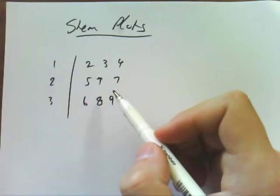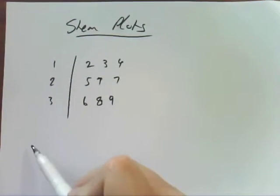So this is an ordered stem plot. You should know how to draw these if you get a set of data.